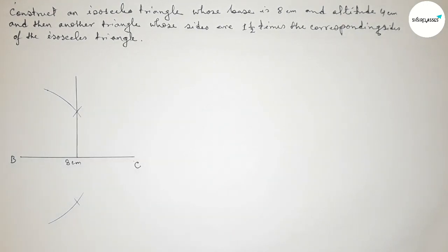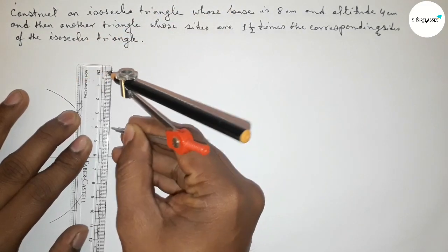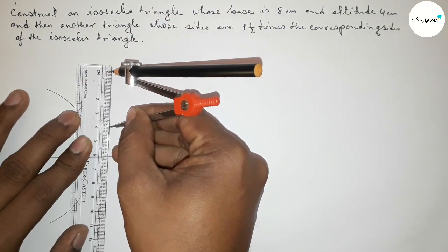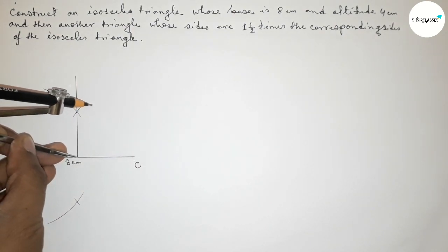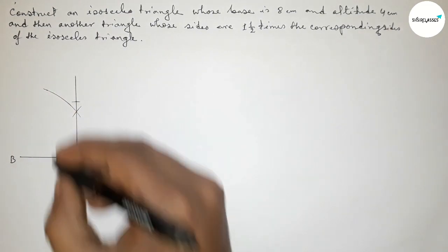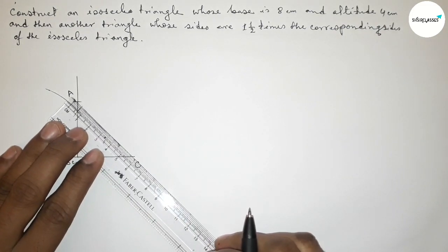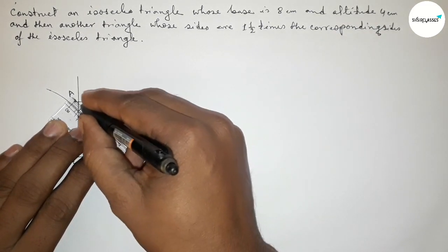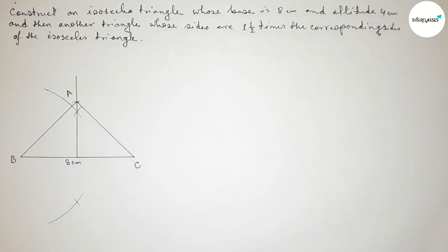Next, taking the 4 centimeter altitude with the help of compass and scale — this is the 4 centimeter length. Putting the compass here and cutting here. Taking point A. Now joining AC and then joining AB to get the isosceles triangle.